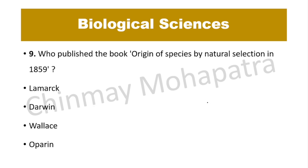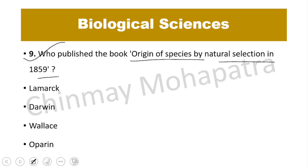Question number 9. Who published the book 'Origin of Species by Natural Selection' in 1859? The right answer is Darwin.